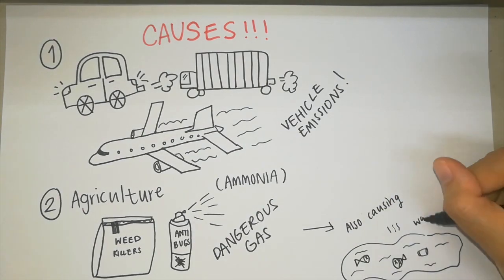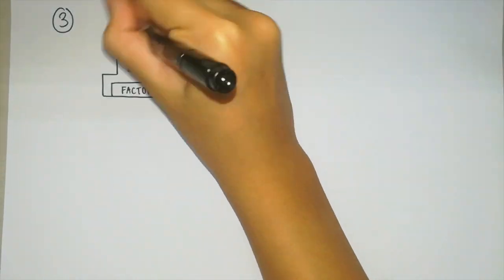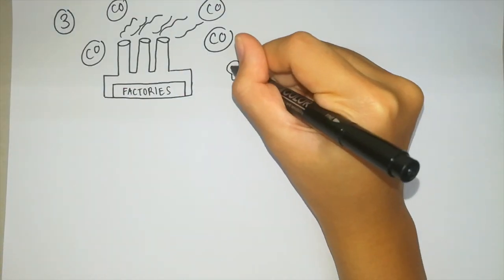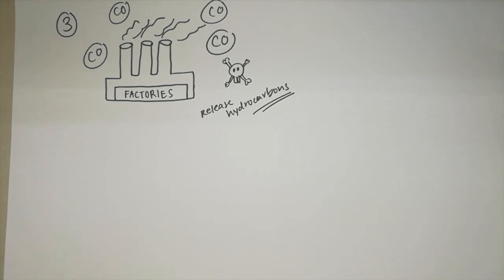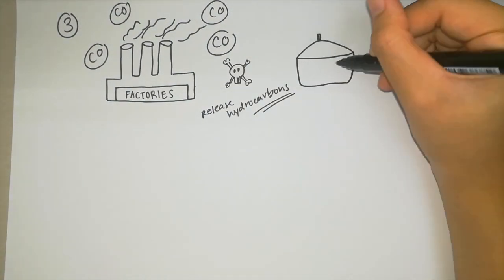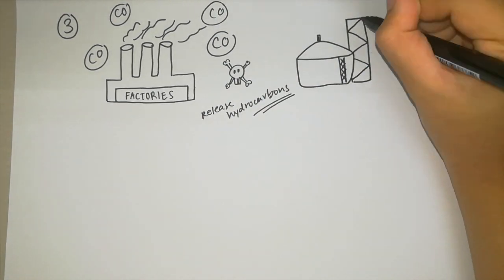The third is smoke or pollution from factories and industries. Manufacturing industries release a large amount of carbon monoxide, hydrocarbons, organic compounds, and chemicals into the air.